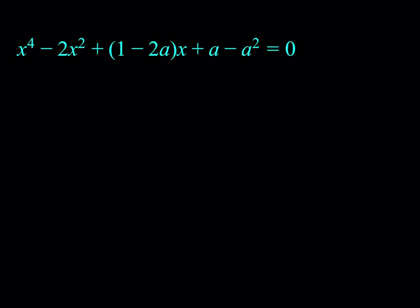Let's get started. So we have this quartic equation: x to the fourth power minus 2x squared plus the quantity (1 minus 2a) multiplied by x, plus a minus a squared, is equal to 0. We're solving for x, but there is another variable, a, which makes this equation more interesting. We can call this a parametric equation — a is a given number, and our solutions will be in terms of a.